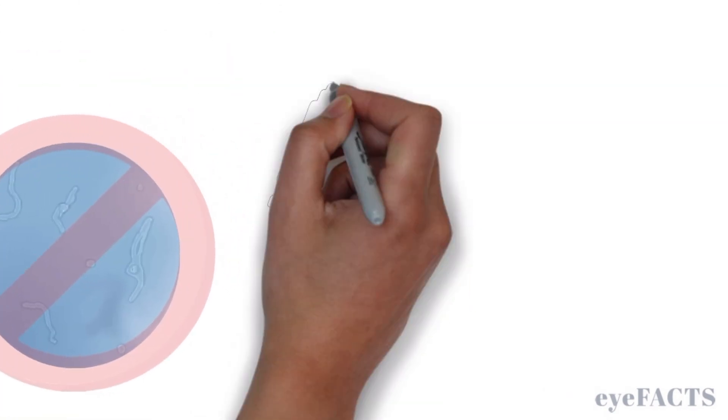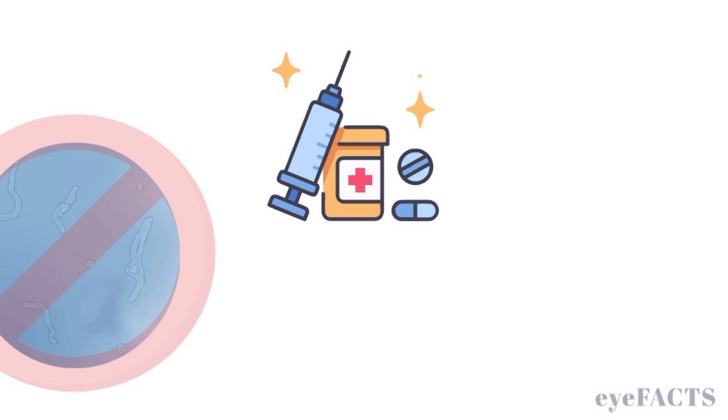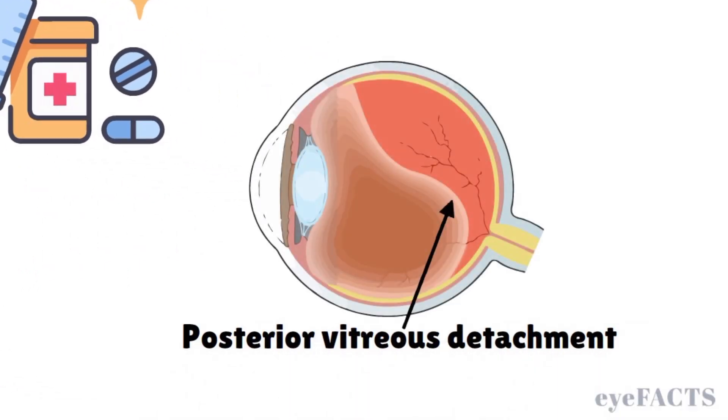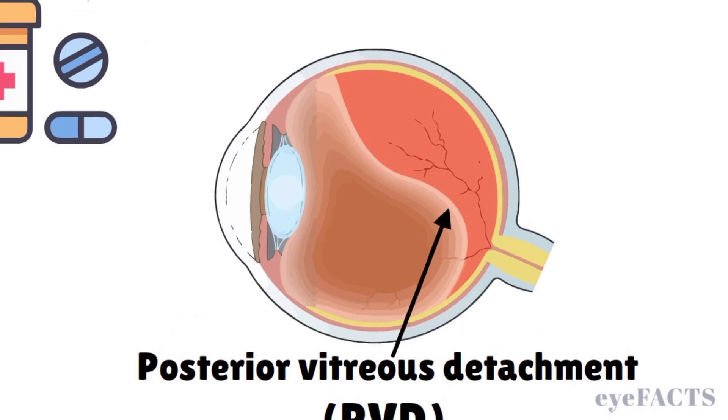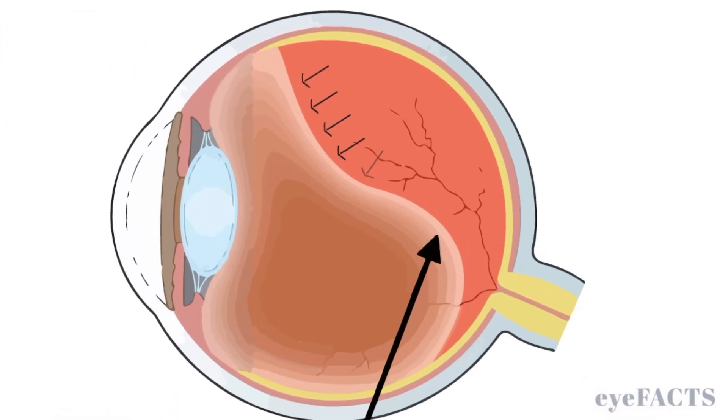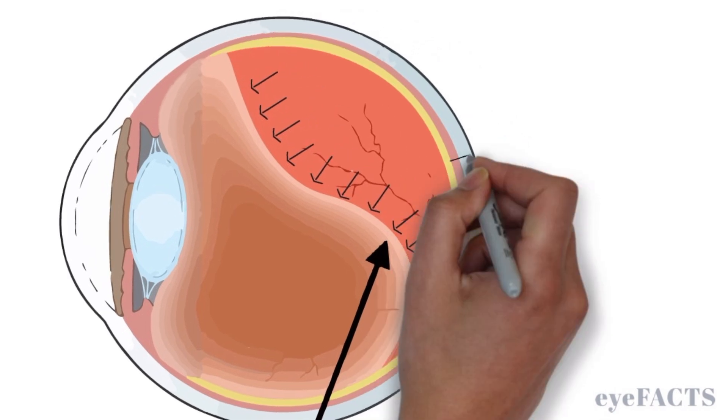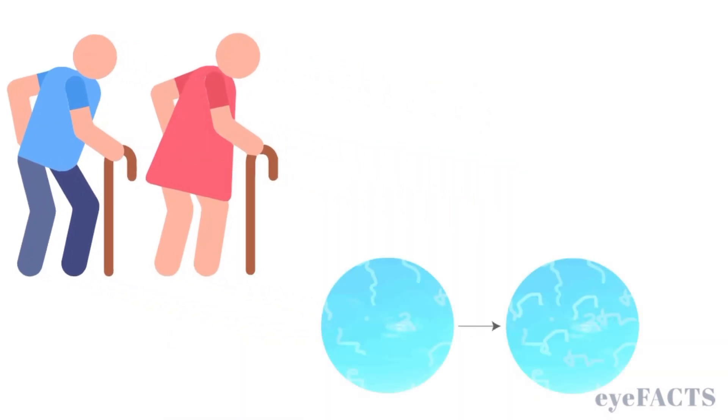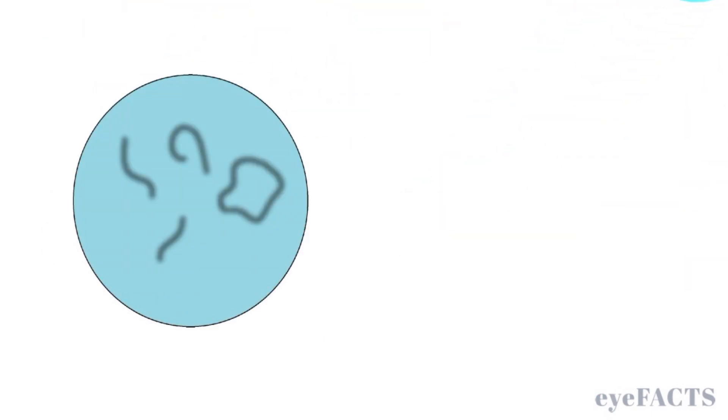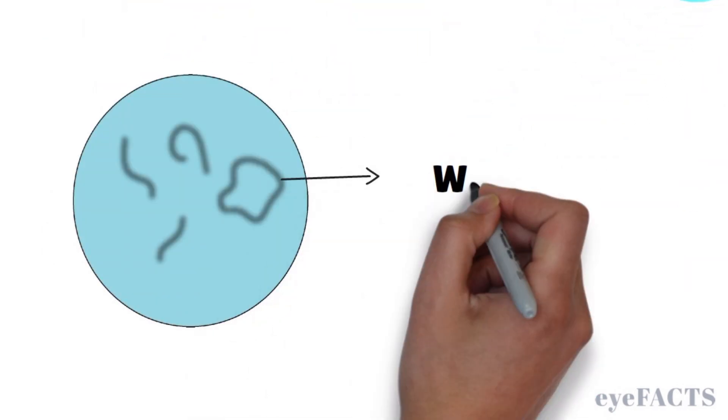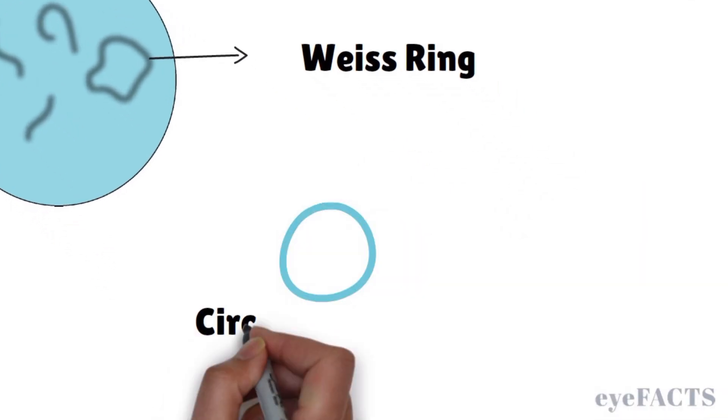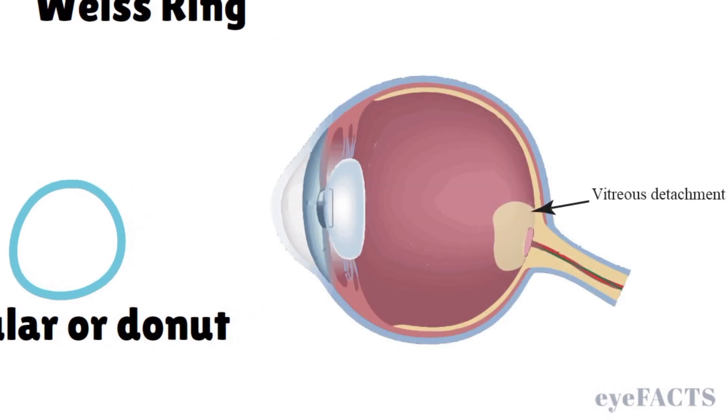Another key event that contributes to floaters is something called a posterior vitreous detachment, or PVD. This happens when the vitreous shrinks away and pulls away from the retina, which is a thin tissue that lines the back of the eye. While this is also a common part of aging, a PVD can make existing floaters more noticeable and can even create new ones. Sometimes a PVD leads to the formation of a specific type of floater known as a Weiss ring, which appears as a circular or donut-shaped shadow in your vision. This happens when the vitreous detaches right at the optic nerve head.